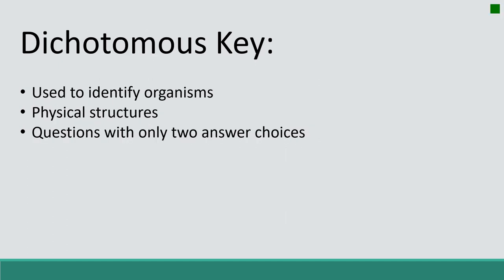The "di" in dichotomous key means that it's a question with only two answer choices — typically. Sometimes we have three, but typically it's just two different choices.